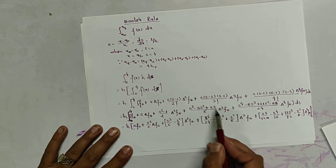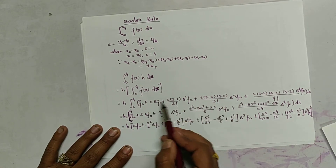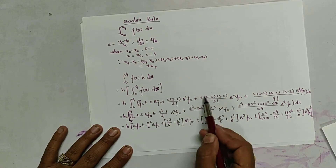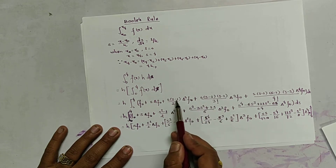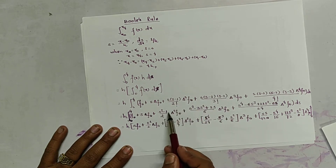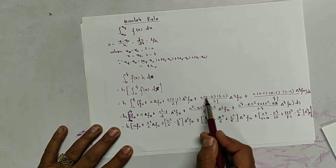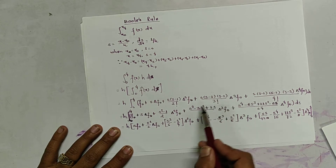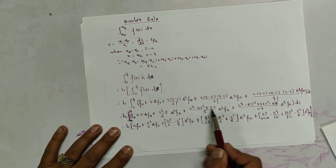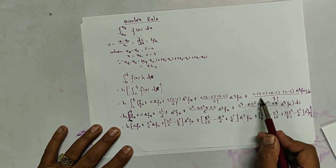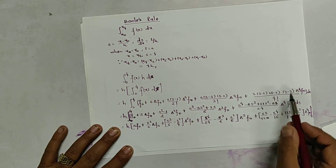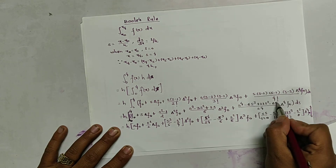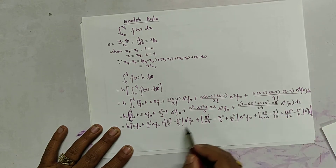We multiply out this expression: s(s−1) becomes s²−s; similarly s(s−1)(s−2) becomes s³−3s²+2s; similarly, s(s−1)(s−2)(s−3) can be expanded into the corresponding form. This gives us 6s terms and so on.